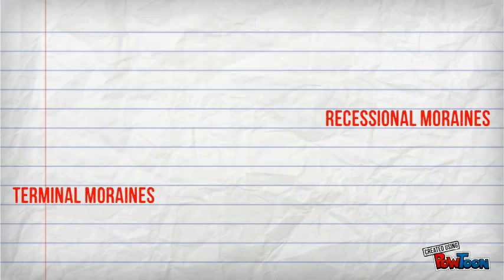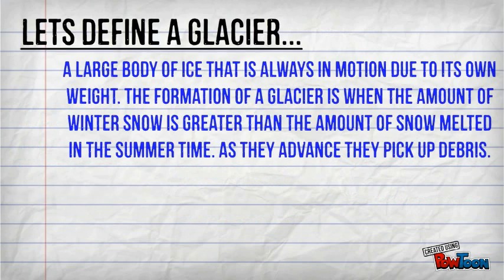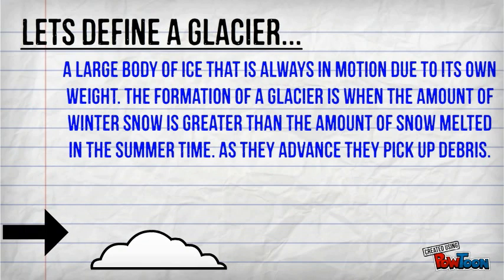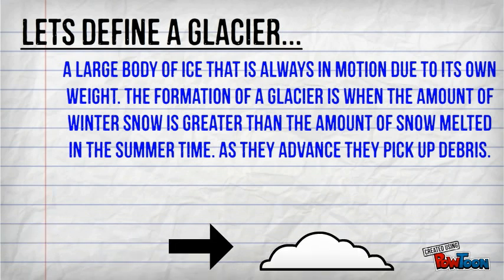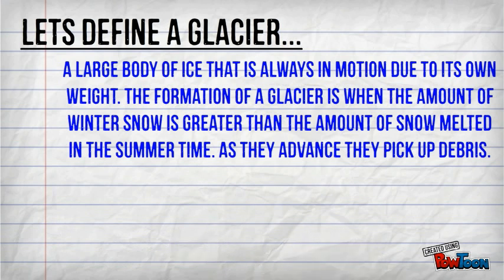Before we start, let's do a short review on what a glacier is. A glacier is a large body of ice that is always in motion due to its own weight. A glacier forms when the amount of winter accumulation is higher than the amount of summer melt.